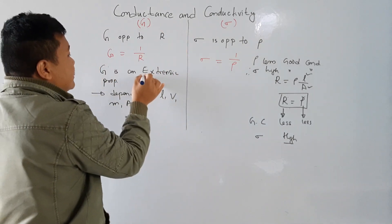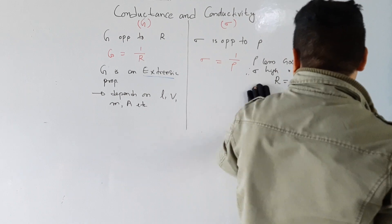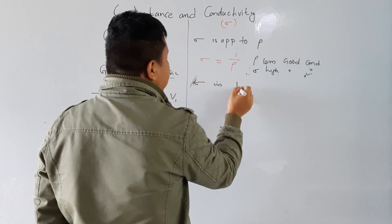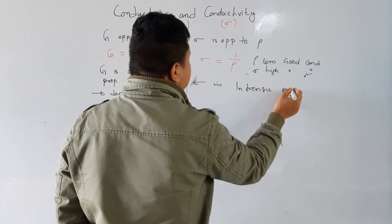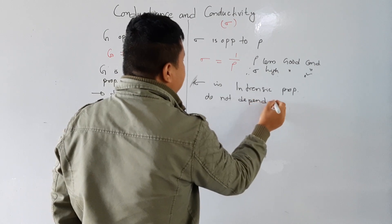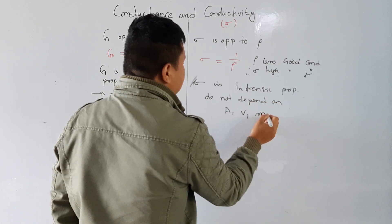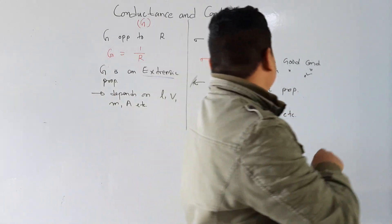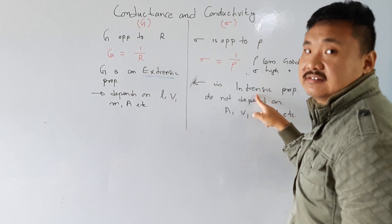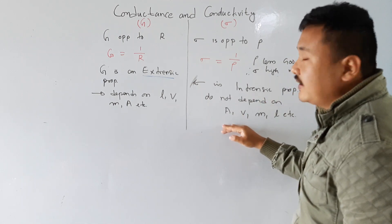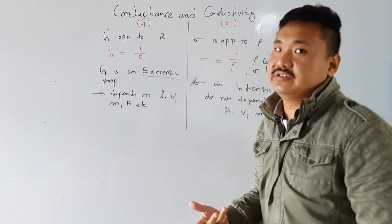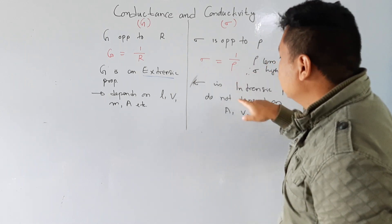If conductance is an extrinsic property, then conductivity sigma is an intrinsic property — very important. Conductivity sigma is an intrinsic property, meaning it does not depend on area, volume, mass, length, etc. The conductivity does not depend upon area, volume, mass, etc.; it is an intrinsic characteristic. Therefore it only depends upon the material — conductivity is different for different materials.